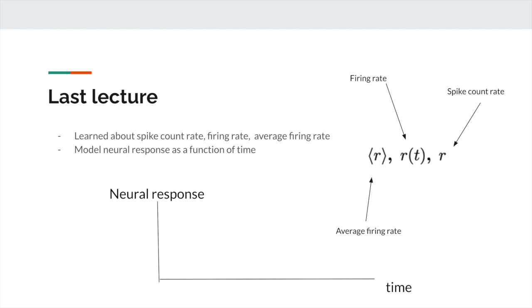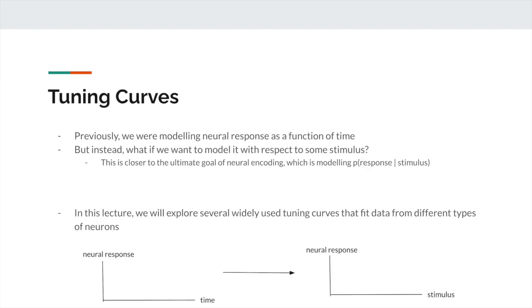We're going to continue this, except instead of modeling neural response with respect to time, we want to map neural response with respect to some stimulus — some external factor the neuron is responding to. This is where we get tuning curves. We're moving closer to the ultimate goal of neural encoding, which is modeling the probability of a response given some stimulus.